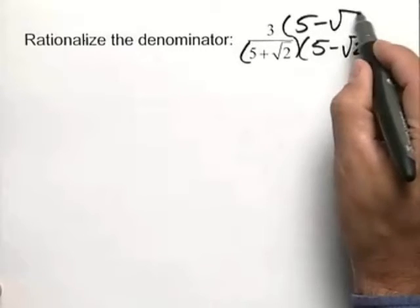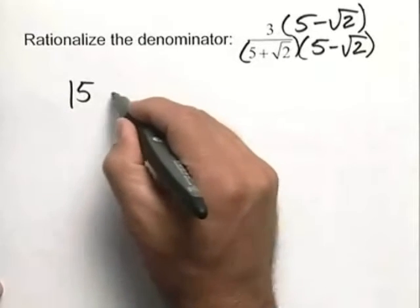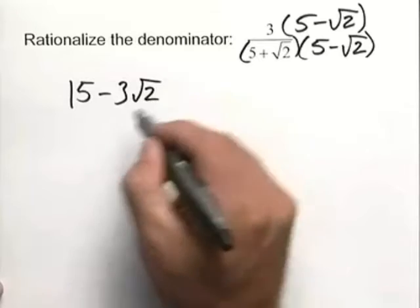And what we do in the denominator, we need to do in the numerator as well. Make sure and distribute so we get 15 minus 3 square root of 2.